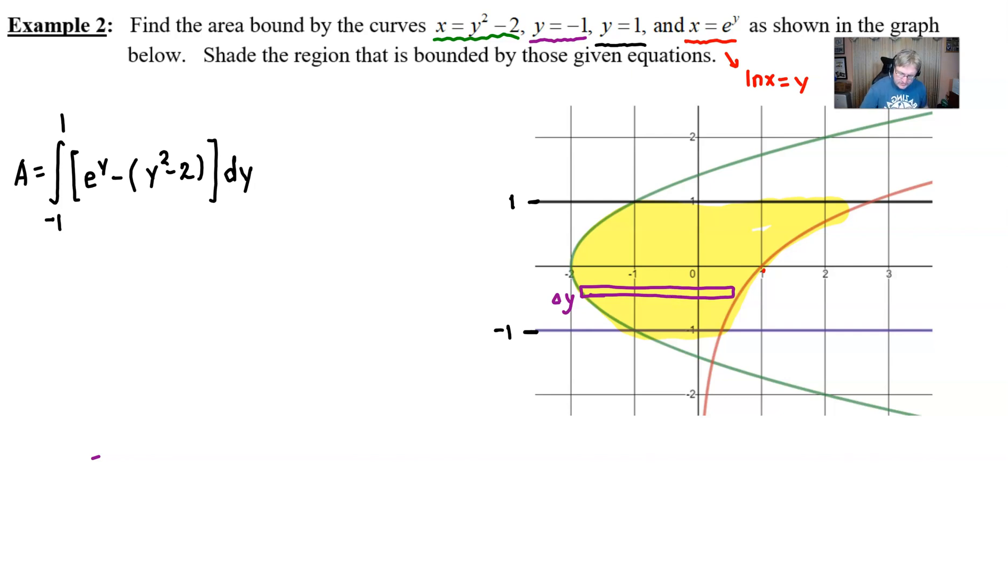So we are at a point where we can do the integration work. I don't see anything that combines, so I'm going to integrate e^y with respect to y which is e^y. Distribute this negative: I get minus the integral of y² which is y³/3, and be careful - double negative means plus. The integral of 2 with respect to y is 2y.